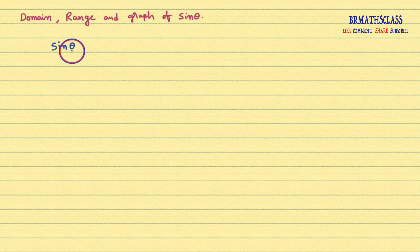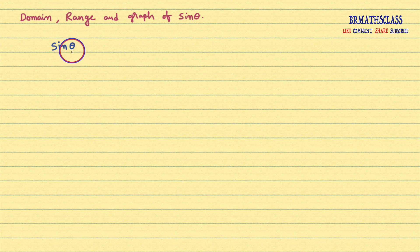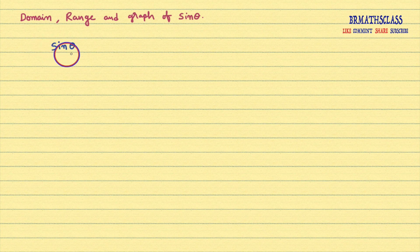For example, theta is 30 degrees. Sine of 30 degrees is 1 by 2. So 2 things are there: one is 30 degrees, another one is 1 by 2. One is theta values, another one is sin theta values. Here I will consider this sin theta values as y.